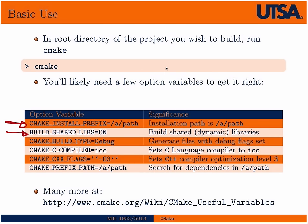CMake has a nice ability to specify debug options by simply specifying the build type. If you type CMake build type debug, it will automatically build with the -g flag when using a GCC or ICC compiler, which is what builds the debug symbols. If you want a release build, set this variable to release — in fact, you don't need to set it at all since release is the default. In a script, it's just a matter of changing one word to switch between debug and release.